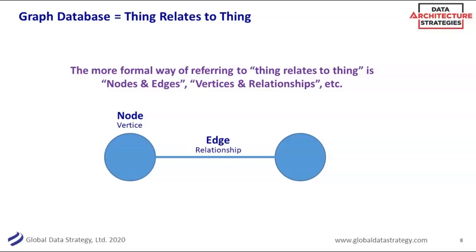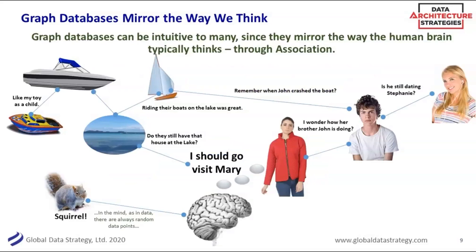One of the nice things about graph is it's a different way of looking at data. The human brain sort of works in a graph-like way. You say something like, 'Oh, I should go visit Mary. Mary's brother John — I wonder how she's doing. Is she still dating Stephanie? Remember he had that boat? Boats on the lake were great. They still have the house on the lake.' Your brain makes these structured connections — Mary has a brother who is John, who has a girlfriend who is Stephanie, who was linked to his boat.